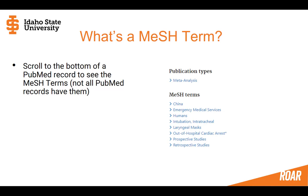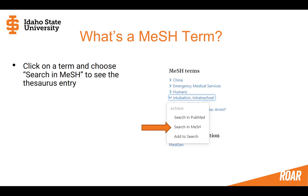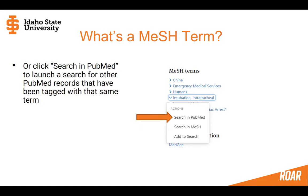Here is an example of mesh terms. At the bottom of a PubMed record, if you scroll down, you can see mesh terms — not all PubMed records have them, but when they are there they are very useful. You can click on one and you'll see three options. We're going to click 'search in MeSH' because I want to show you what the thesaurus looks like behind the scenes, but if you clicked 'search in PubMed' it would launch a search for other records that have the same tag.